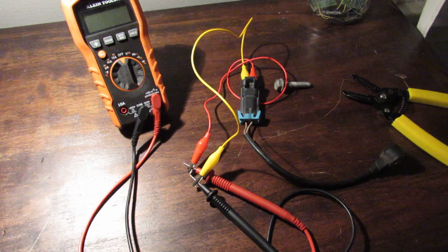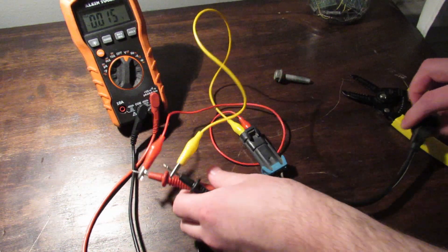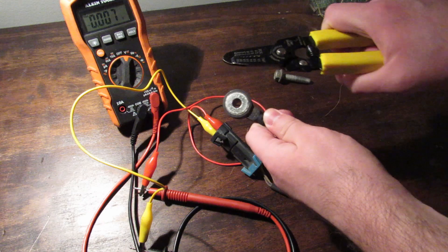You can test a knock sensor with a multimeter. You just set it to voltage, and I've got to connect with alligator clips to this, and you just give it a good tap.